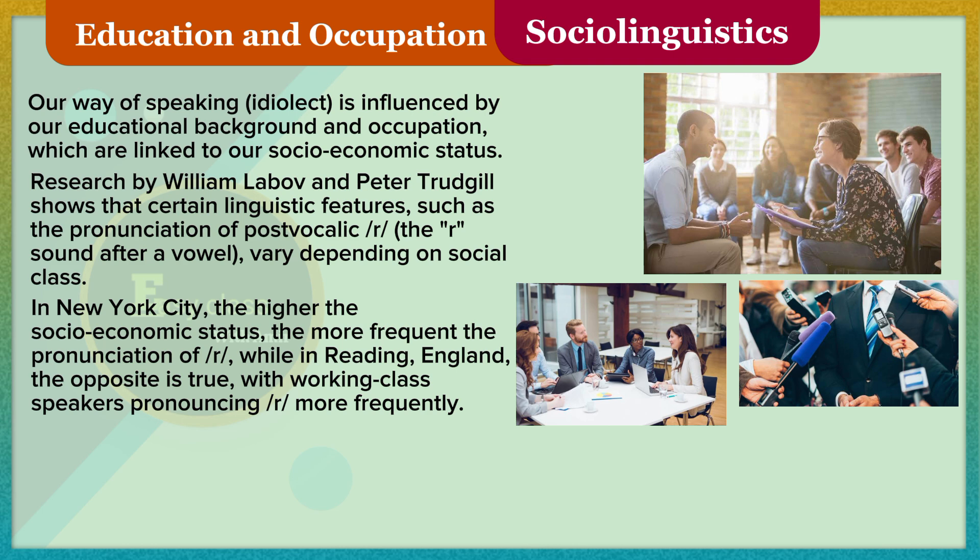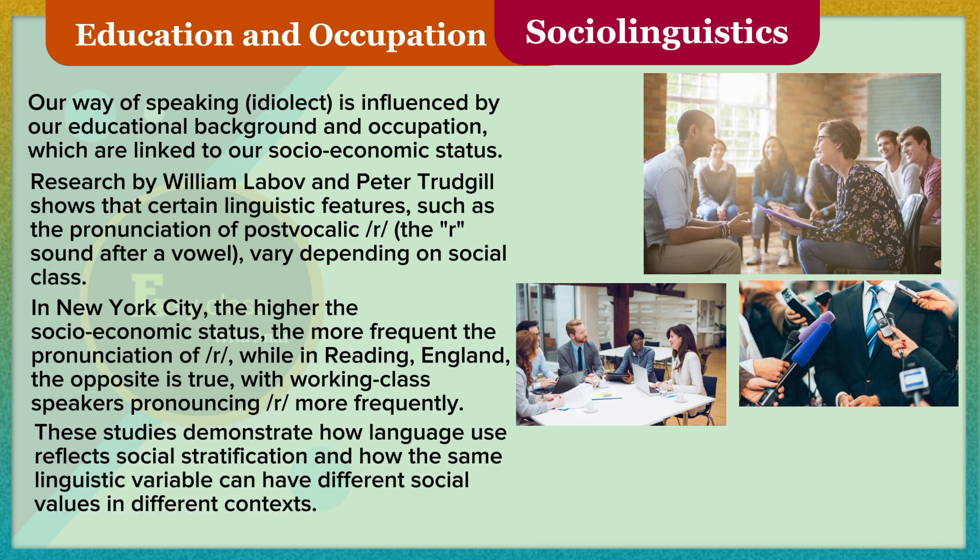In New York City, the higher the socioeconomic status, the more frequent the pronunciation of R, while in Reading, England, the opposite is true, with working-class speakers pronouncing R more frequently. These studies demonstrate how language use reflects social stratification, and how the same linguistic variable can have different social values in different contexts.